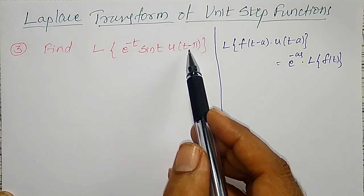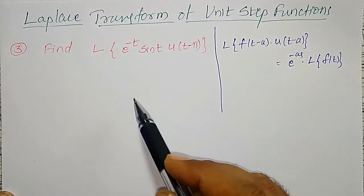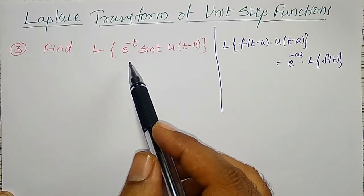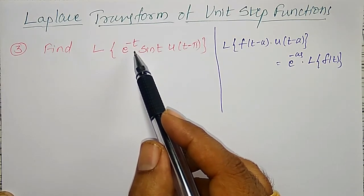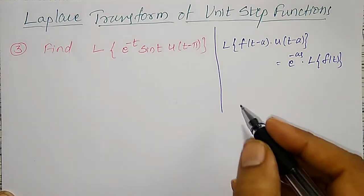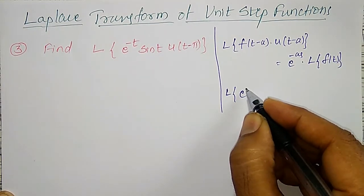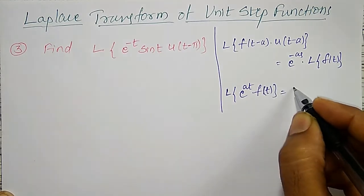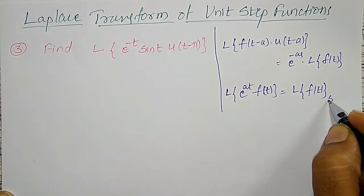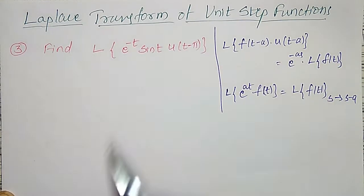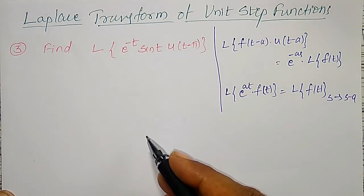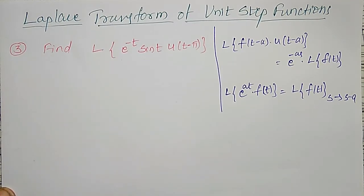Here, it is u(t minus pi), therefore my a is pi. And f(t minus a), which is (t minus pi), is e to the power minus st multiplied with e to the power minus t. Therefore, I have to use one more property of Laplace Transform: Laplace Transform of e to the power at into f(t) is given by Laplace Transform of f(t) with s replaced by s minus a. These two properties I have to use, and which one you apply first and which one next is important. I will solve in both methods so you can follow whichever is easier.